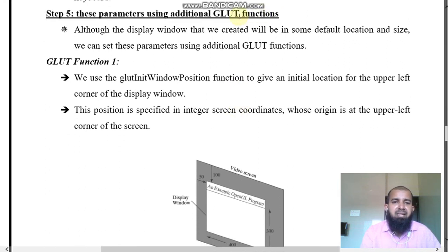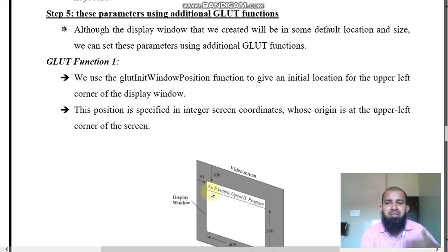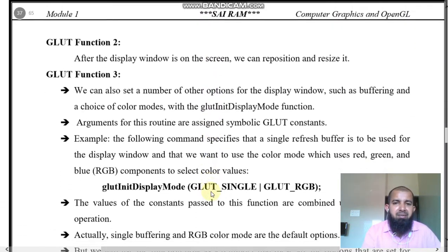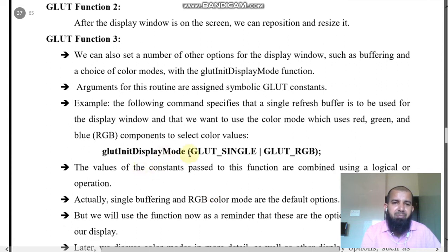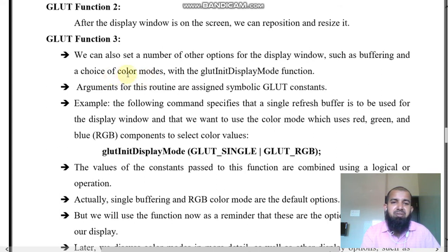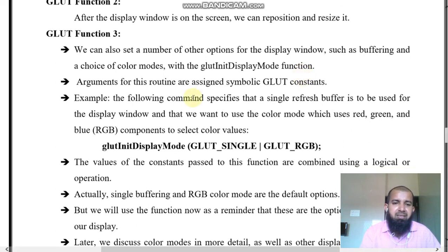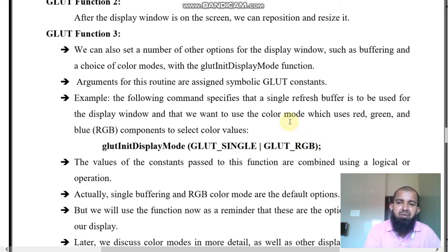glutWindowPosition specifies where the window position is on screen. glutInitDisplayMode allows setting a number of options for the display window, such as buffering and choice of color modes. For example, GLUT_SINGLE or GLUT_RGB — RGB means red, green, blue components — to select color values.